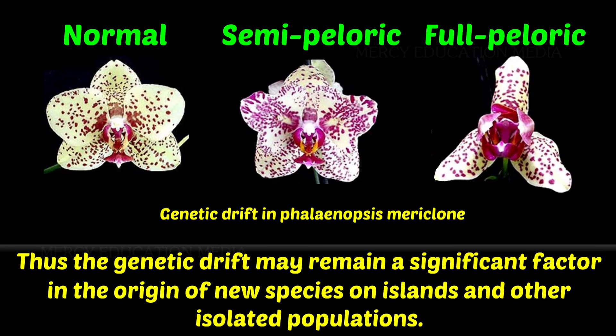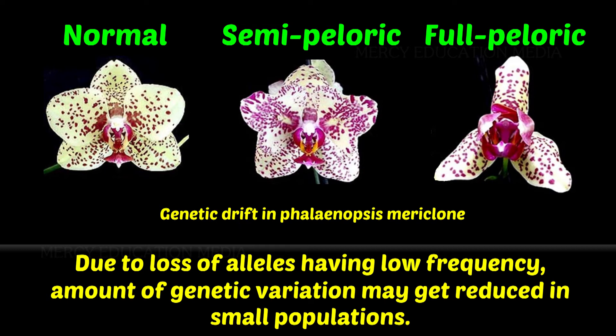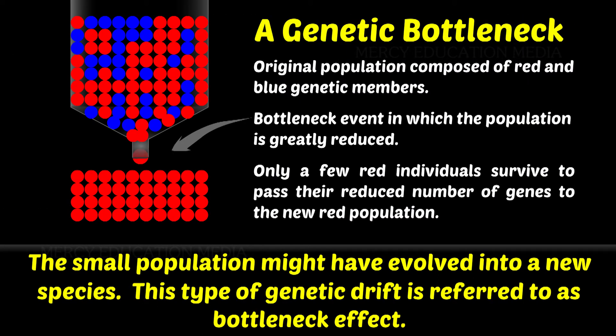Thus, genetic drift may remain a significant factor in the origin of new species on islands and other isolated populations. Due to loss of alleles having low frequency, the amount of genetic variation may get reduced in small populations. The small population might have evolved into a new species. This type of genetic drift is referred to as the bottleneck effect.